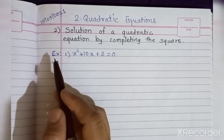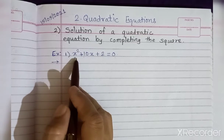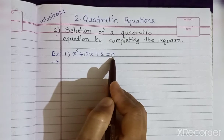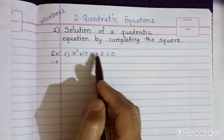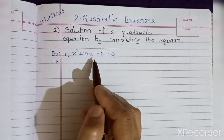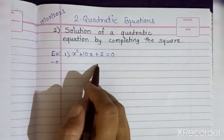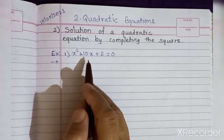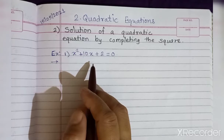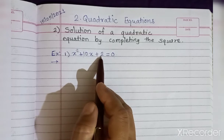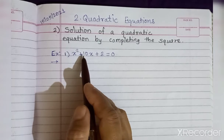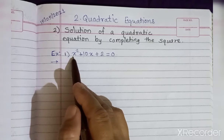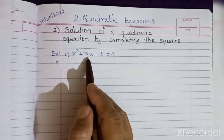I have taken an example: x² + 10x + 2 = 0. If you observe this quadratic equation, we can't solve it by factorization method because it's not possible to find the factors of 2 whose sum is 10.